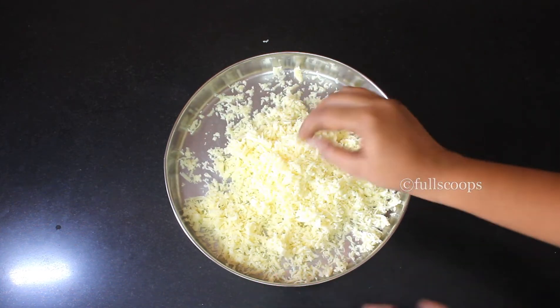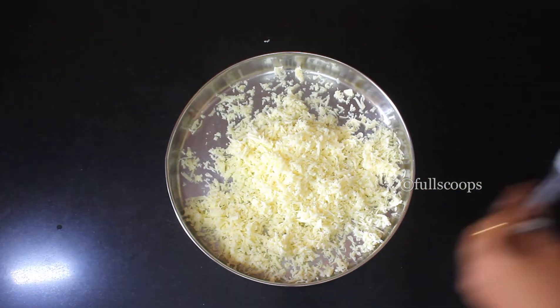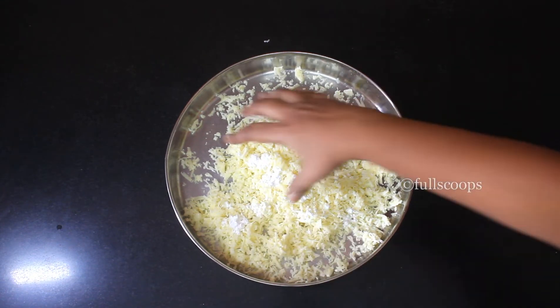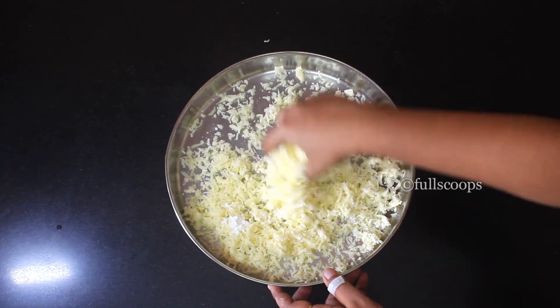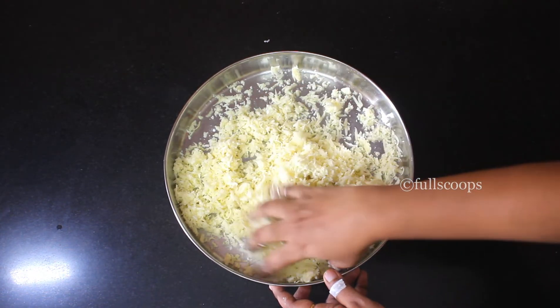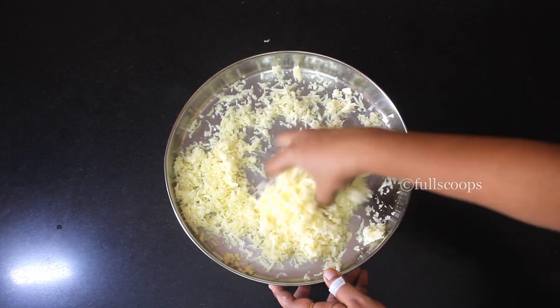You should not add too much corn flour. Only if you add too much corn flour, it changes the taste of the cheese itself. But you can add this amount. 1 teaspoon is more than enough for 1 whole cube of cheese. This will not change the taste of the cheese in any way.